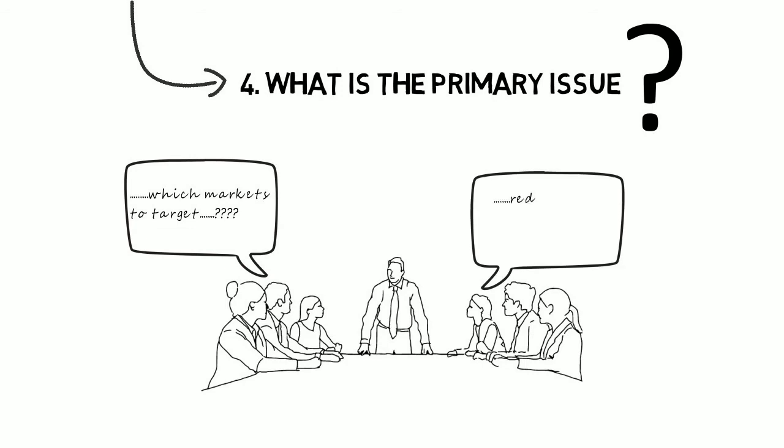But if the production manager believes the primary issue is how to reduce the number of products to lower costs and improve delivery times, then the key options to consider include different ways of reducing the number of products.